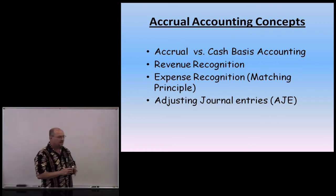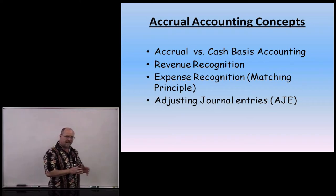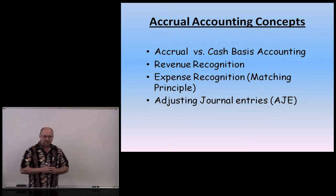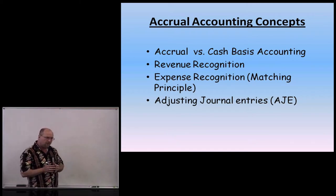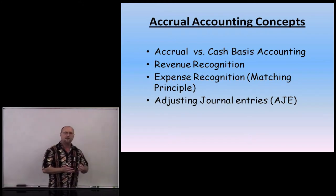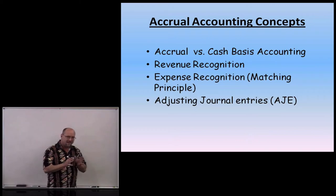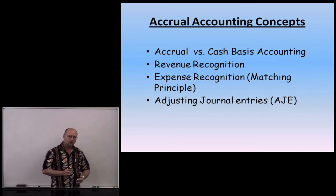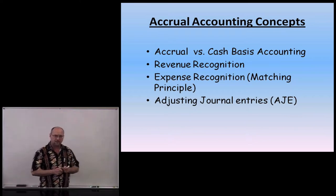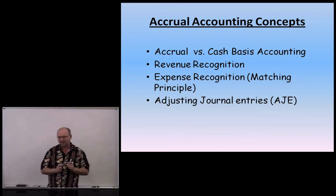Revenue recognition in accounting simply means when do we record a journal entry and credit the revenue account. Expense recognition, which we call the matching principle, says we should record an expense in the same time period that it helps to generate revenue. Sometimes it's easy to identify when to record an expense; other times it's not. This is what makes this area difficult. Because of these two basic rules — revenue recognition and the matching principle — they generate all sorts of adjusting journal entries, which most people find very difficult. You'll have to read this material a few times and practice it to master it. Probably the toughest chapter in the whole class.